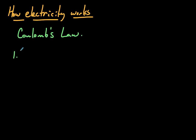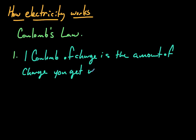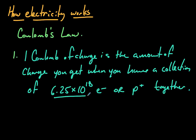First principles. Number one, in electricity: one Coulomb of charge — this is kind of a bit of a repeat, but it's good to have here — is the amount of charge you get when you have a collection of 6.25 times 10 to the 18 electrons or protons together. So it's the amount of charge carried by this number of electrons or protons.